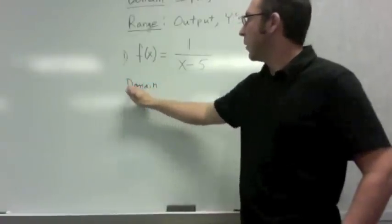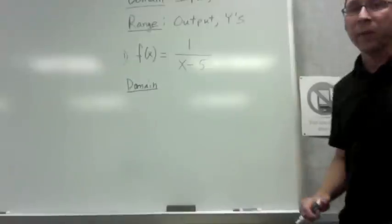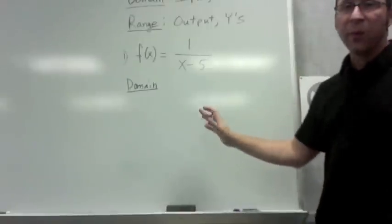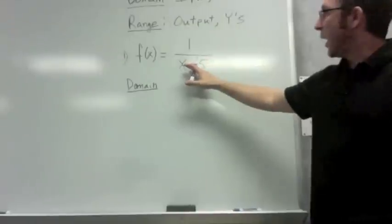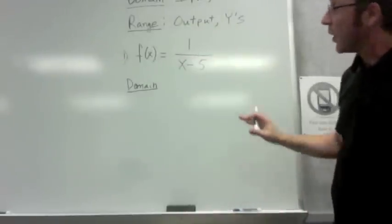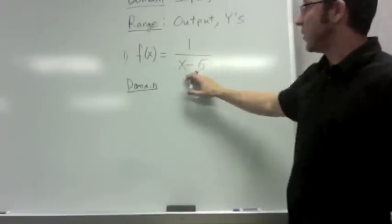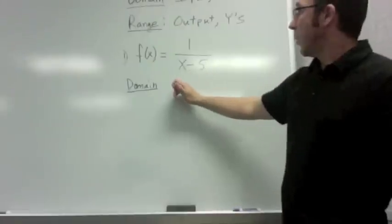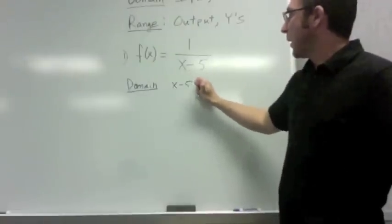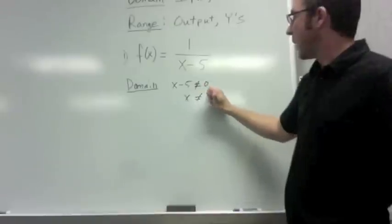And again, for the domain, the domain is what we're allowed to plug in. You can plug in any number you'd like for x, as long as you stay away from 5, because you cannot have a 0 in the denominator. So we know that the denominator cannot be 5. Have x equals 5 because it gives us a 0 here. So we know that x minus 5 cannot equal 0. So that means that we have to stay away from x equals 5.